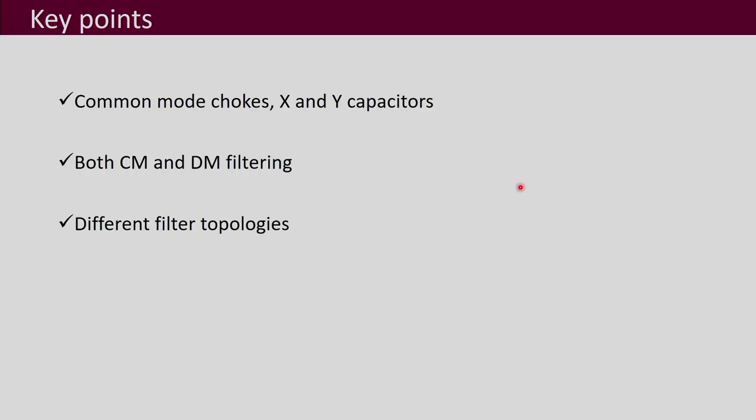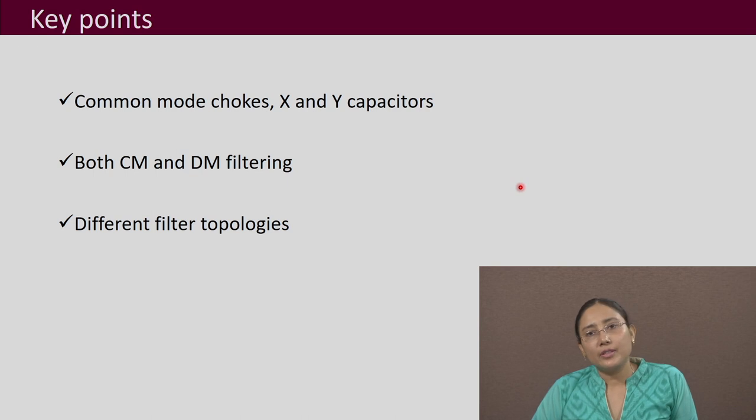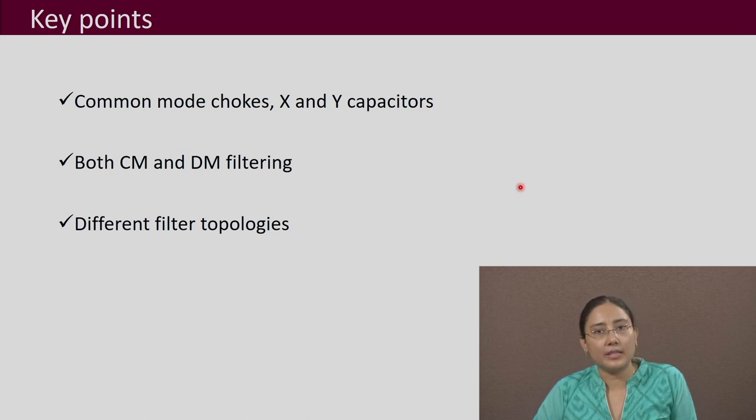When we say analysis of the filter, you write down the equations and plot what is called the insertion loss or attenuation plot, from which the filters can be designed. How to design a filter will not be covered in this course — I will just cover the basic terms important for choosing an existing filter. The key points of this lecture are that common mode chokes and X and Y capacitors are used to make EMI filters. These filters filter out both common mode and differential mode noise. There are different filter topologies, and based on the requirement a particular topology can be selected. Thank you.